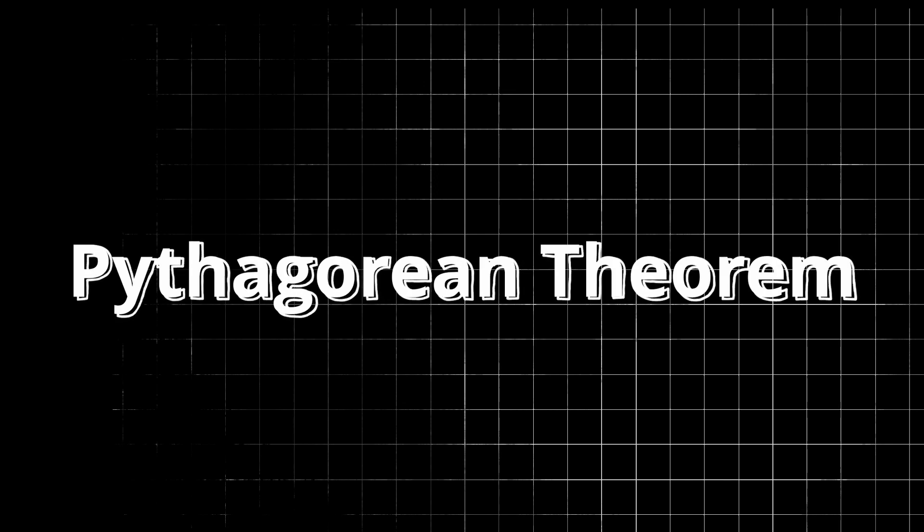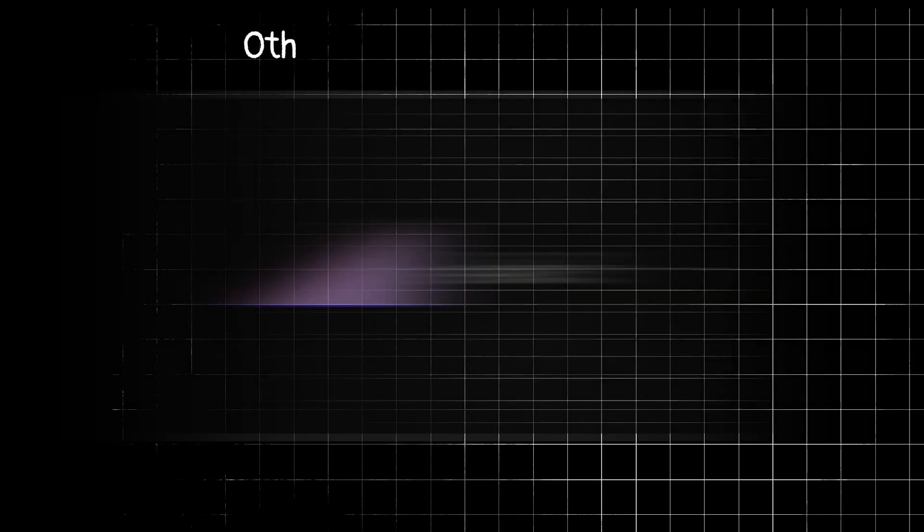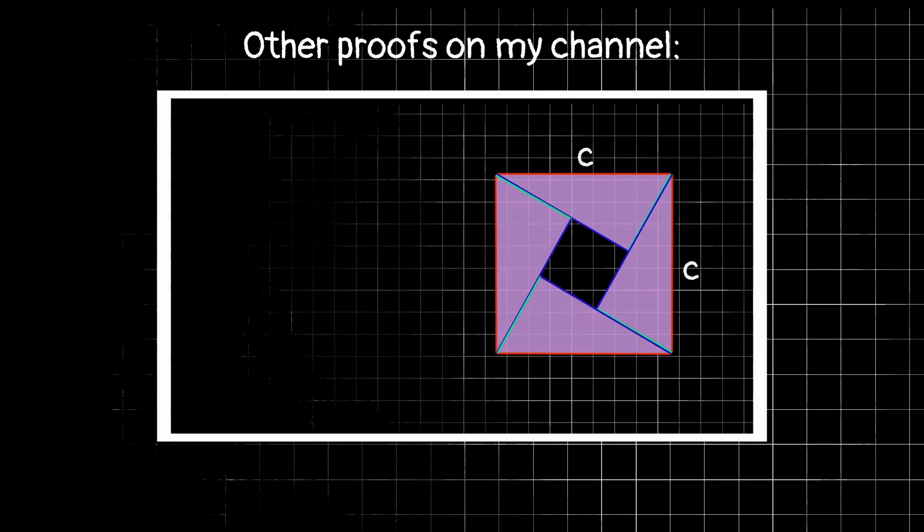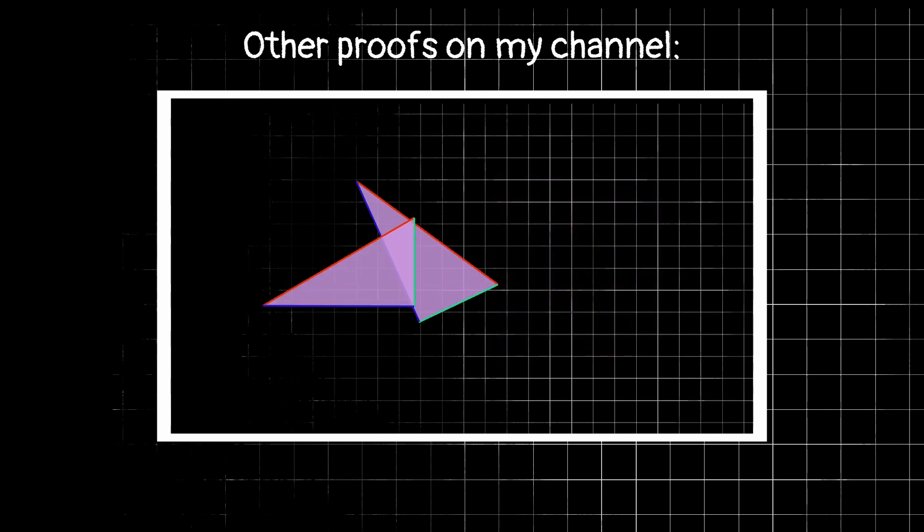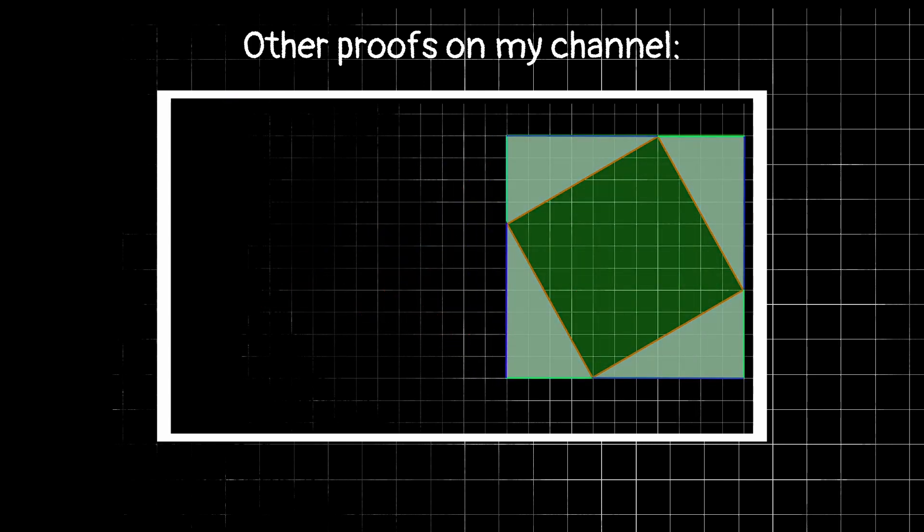This is actually the third proof that I've explored on my channel, but I just think it's really cool to show multiple different paths that can lead to the same destination. There are hundreds of proofs of the Pythagorean Theorem out there, but I thought this one was neat because we're using a circle to prove a fact about a triangle.